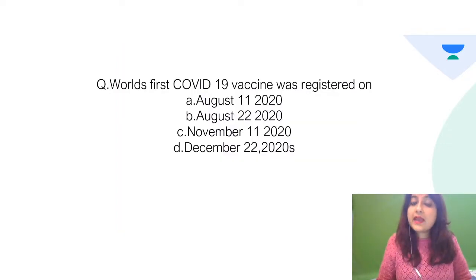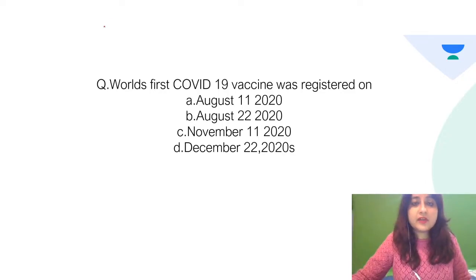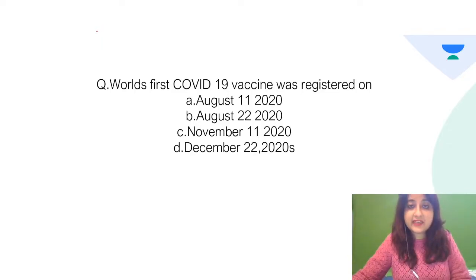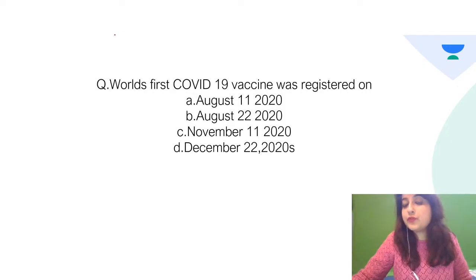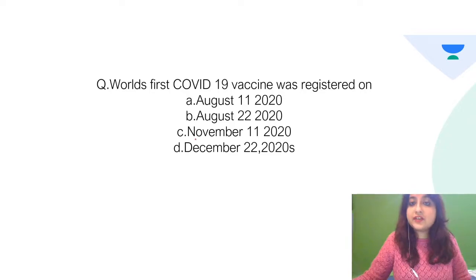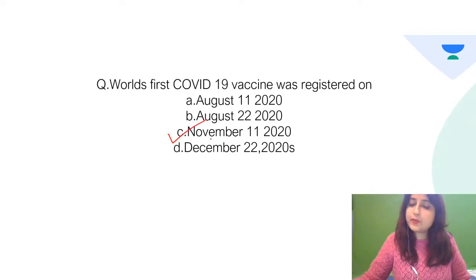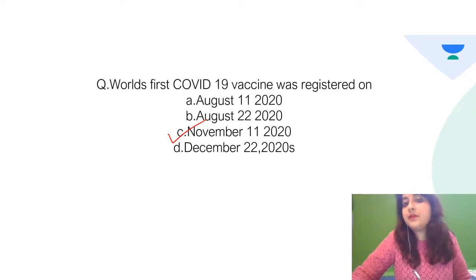The first question: when was the world's first COVID-19 vaccine registered? Options were August 11 2020, August 22 2020, November 11 2020, or December 22 2020. The correct answer is November 11, 2020 — that is when the world's first COVID-19 vaccine was registered.